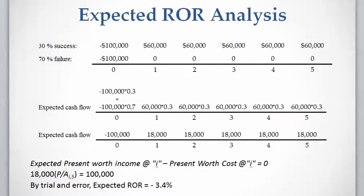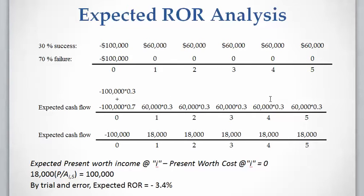To calculate the expected cash flow for each year, we calculate the expected money that will occur in that year. For example, at year zero we have $100,000 of investment with 30% probability plus $100,000 of investment at 70% probability of failure. For year one, we have $60,000 of income multiplied by 30% probability, and zero income with 70% probability — which is not written since it equals zero. The same applies for the other years.